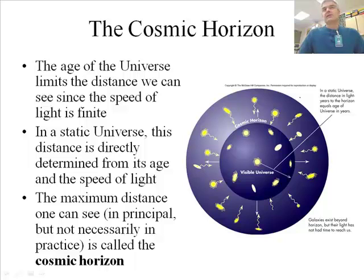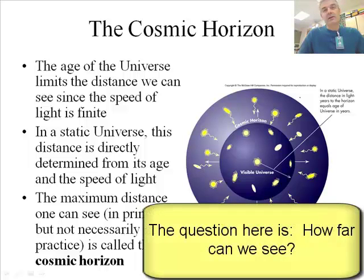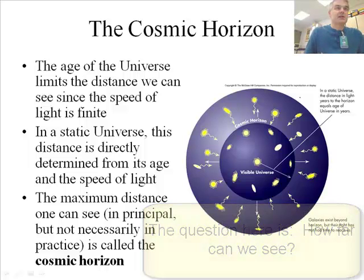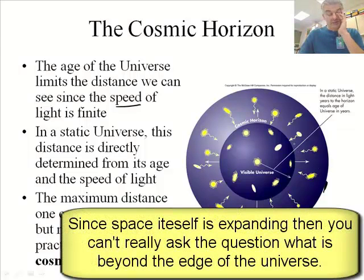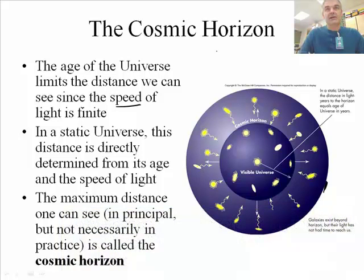So, this leads us to what's called the cosmic horizon. If our assumptions are correct, that Hubble's law is correct and everything was once together, then the age of the universe limits the distance we can see, since the speed of light is finite. What's at the edge of the universe? That's sort of almost a nonsensical question if this is true. The universe is expanding itself, and space itself is expanding. So there's not like there's something outside here. This is all there is.